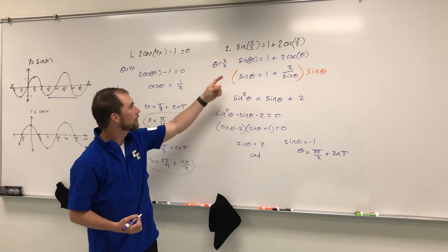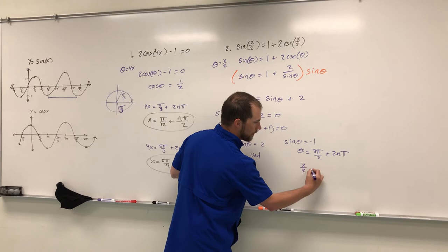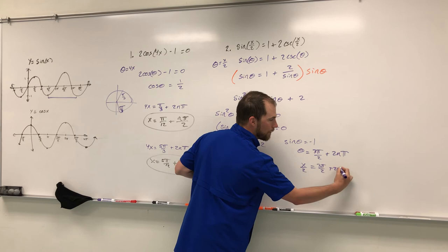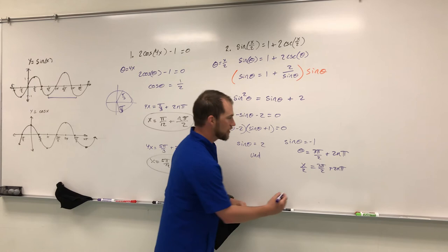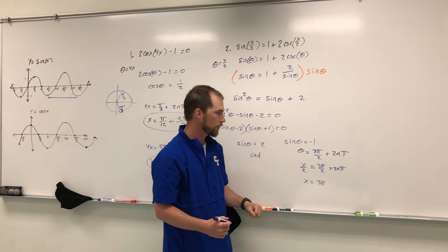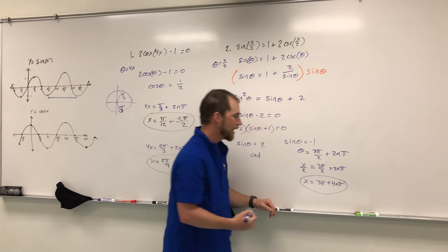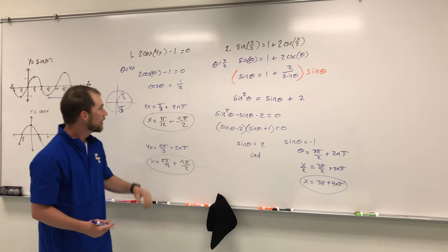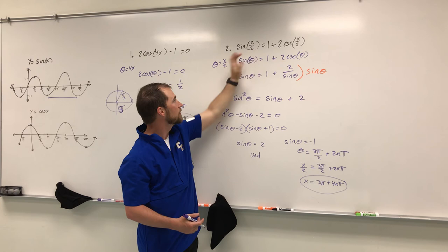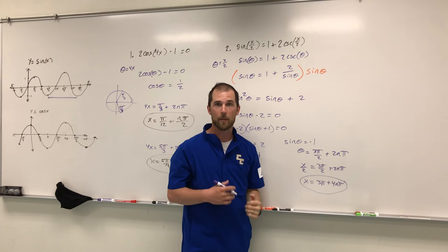For sine theta equals negative 1, theta equals 3 pi over 2 plus 2n pi. Since we want x, we substitute x over 2 back in for theta: x over 2 equals 3 pi over 2 plus 2n pi. Multiplying everything by 2, x equals 3 pi plus 4n pi. That's our only answer since the other factor was undefined. In summary, substitute x over 2 for theta as long as the angles match; otherwise use double angle or half angle formulas.